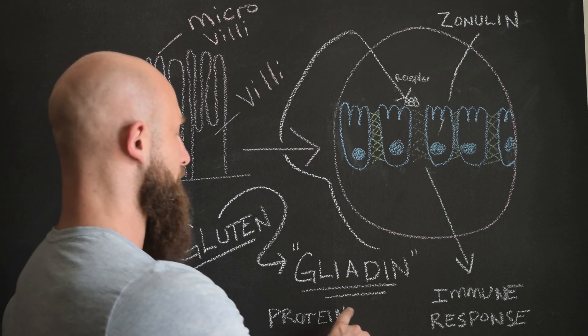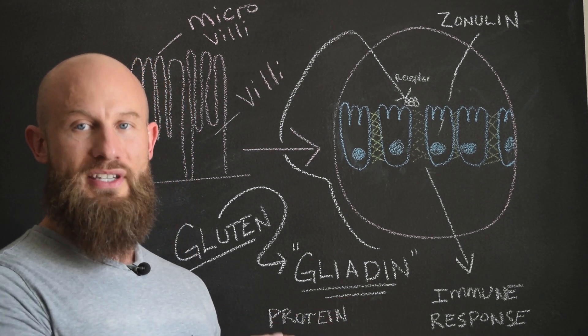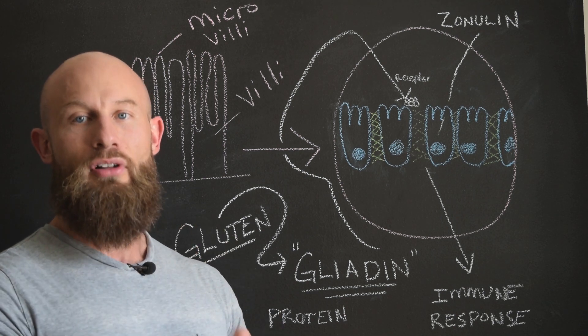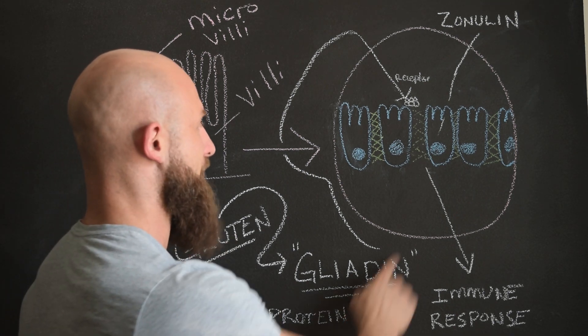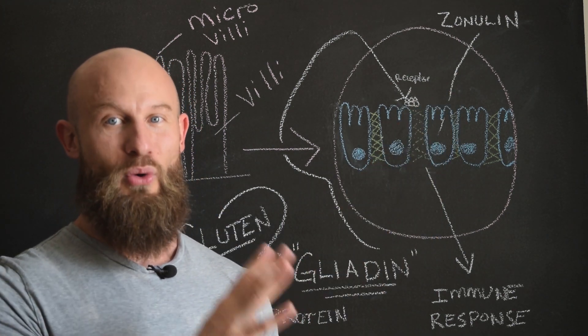But since I've figured that out, again, it's gliadin that's in the protein. Gliadin is the protein that is undigestible from within gluten. And then gliadin is what signals zonulin to open up the intestinal lining and we don't want that.